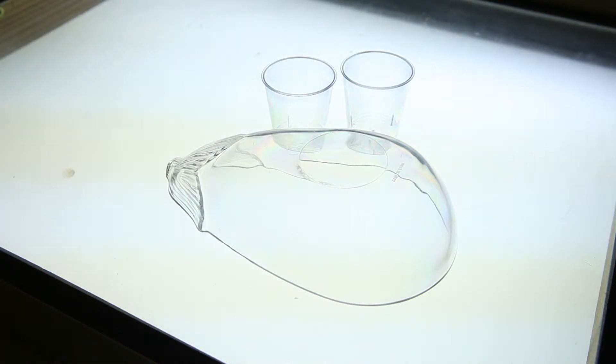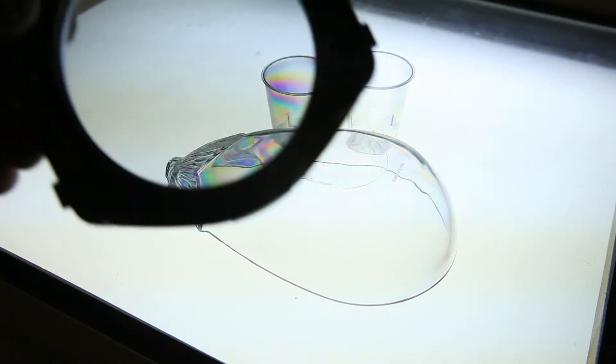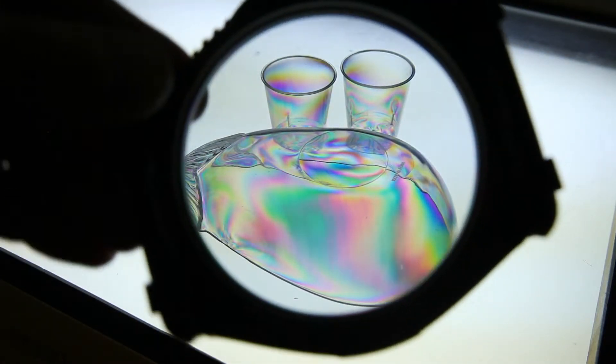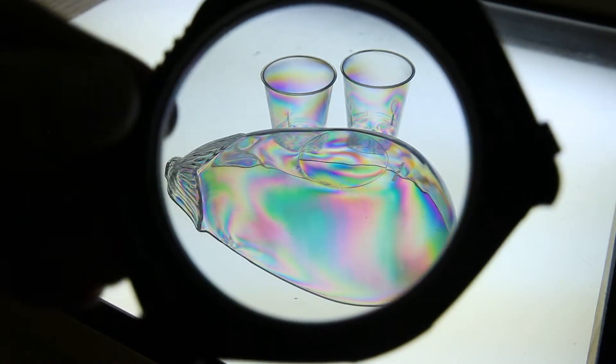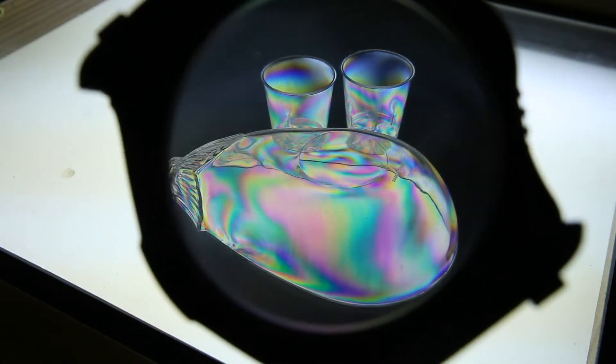I'm now going to put a polarising filter in front of the lens, and you can see immediately that the biofringence, the colours, show up in the material.